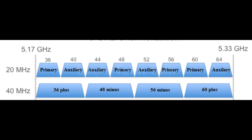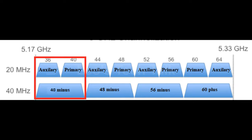40+ and 40-: Two adjacent 20 MHz channels that do not interfere with each other are bonded into a 40 MHz channel. One of the two 20 MHz channels is the primary channel and the other is the auxiliary channel. If the center frequency of the primary channel is lower than that of the auxiliary channel, the operating channel bandwidth is 40+ MHz. On the other hand, if the center frequency of the primary channel is higher than that of the auxiliary channel, the operating channel bandwidth is 40- MHz. For example, when channels 36 and 40 are bonded into a 40 MHz channel, if channel 36 is the primary channel, the operating channel bandwidth is 36+ MHz. If channel 40 is the primary channel, the operating channel bandwidth is 40- MHz.